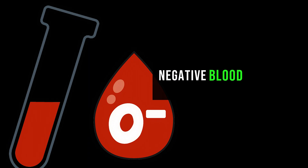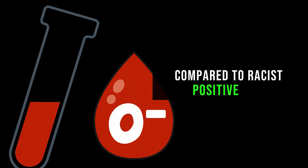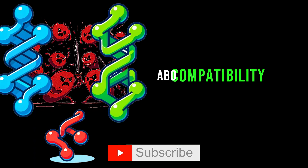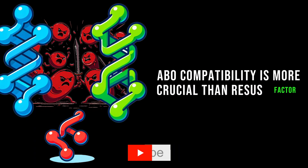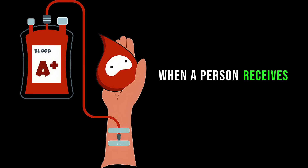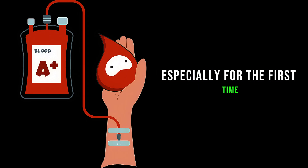As a general rule, negative blood types are much less common compared to Rhesus positive ones. Also, ABO compatibility is more crucial than the Rhesus factor when a person receives a blood transfusion, especially for the first time.